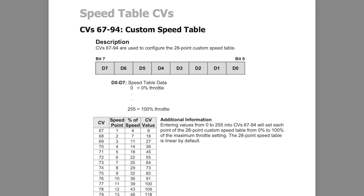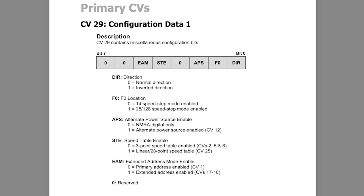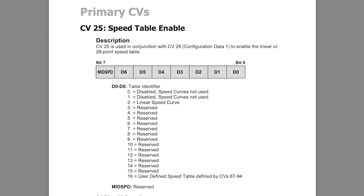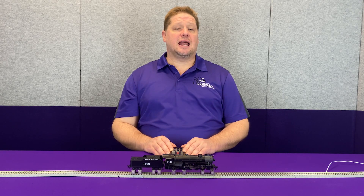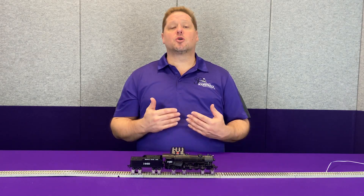Now one of the more refined ways to adjust the speed is to adjust each of the 28 steps for a percentage of the amount of throttle applied to the motor. You can do that with CV67 through CV94, which represent each of the 28 speed steps. First, in order to enable that, we have to enable the alternate speed tables in CV29, which then disables CV5 and CV6 and enables CV66 through CV95. You also want to make sure that CV25 is set to a value of 16 to enable the custom speed table.